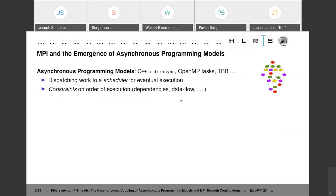When we talk about asynchronous programming models, we mean things like C++ nested async or OpenMP tasks or TBB, anything where work is somehow dispatched to a scheduler and that scheduler will eventually take care of the execution of that work. Of course, there can be constraints on the order of execution like data dependencies in OpenMP or data flow in C++ future promise pairs.